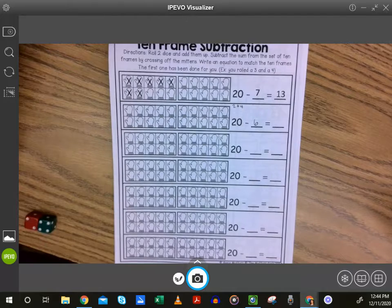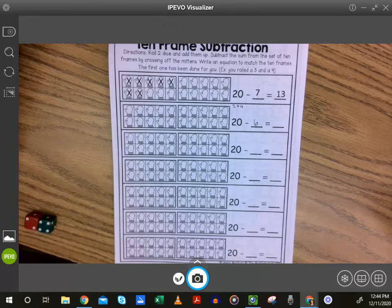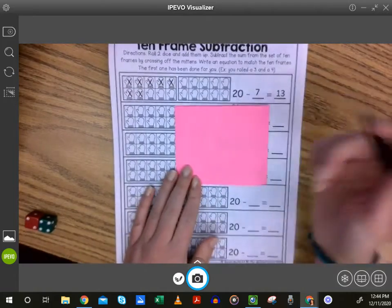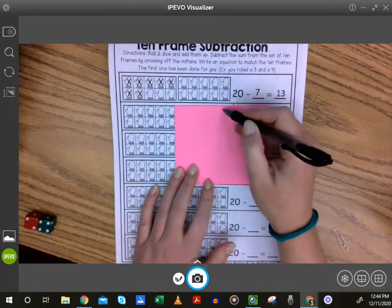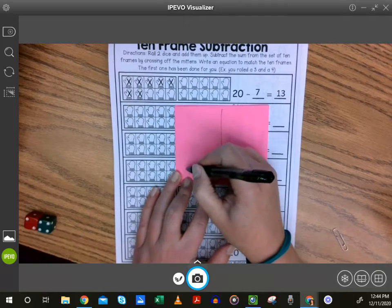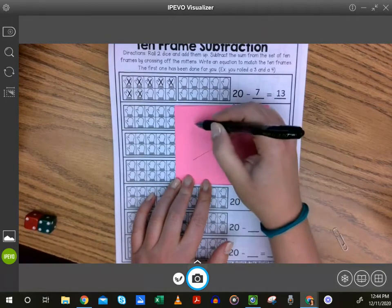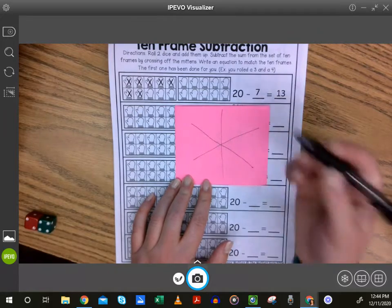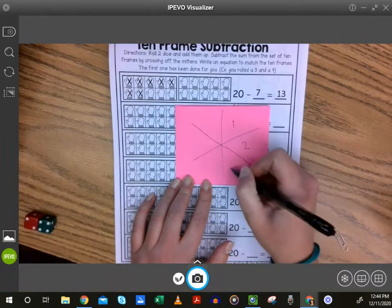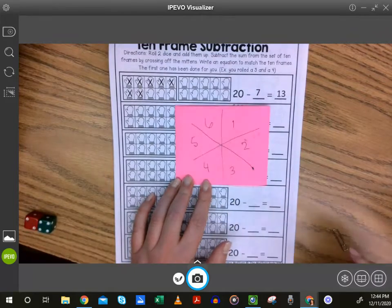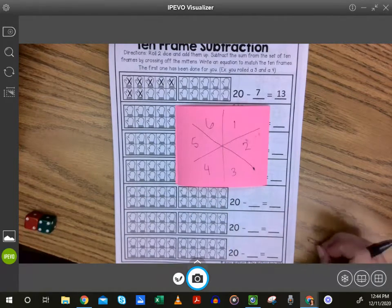Now, if you don't have any dice at your house, another way you could do this is take a scratch piece of paper, and I'm just going to break it into six pieces. I'm going to kind of make a star shape. One, two, three, four, five, six. Oh, my pen's messy.